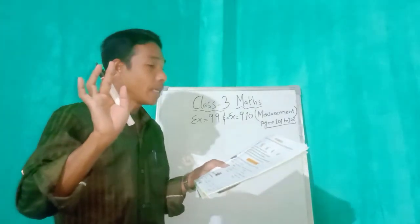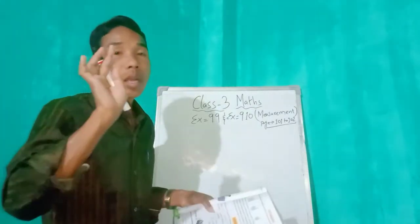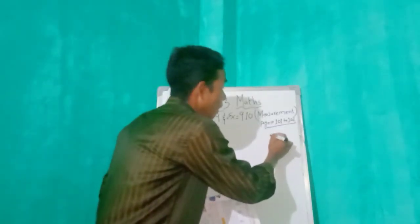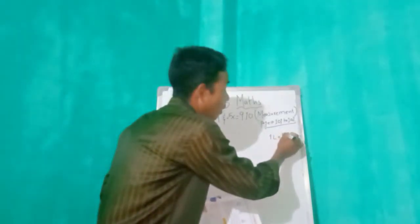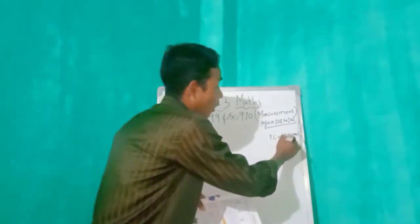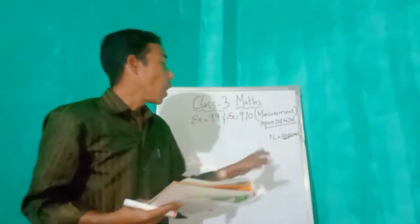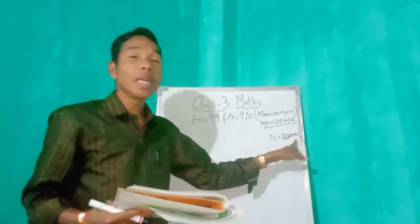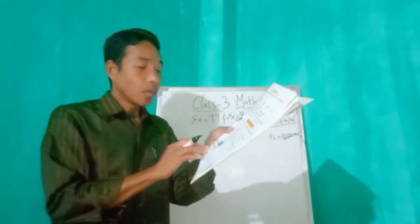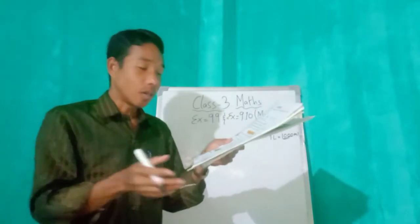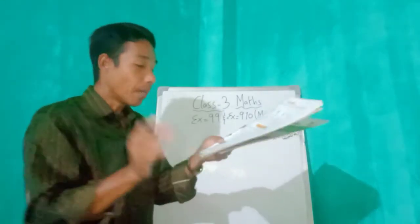Just keep in mind: one liter equals how many milliliters? One thousand milliliters. One liter equals 1000 milliliters. So we have to convert into milliliters.